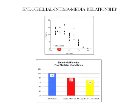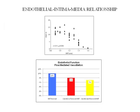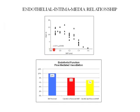Plotting flow-mediated vasodilatation — a marker of endothelial function — against intermediate thickness — a marker of soft plaque deposition — there's an inverse relationship. Individuals with strong endothelial function and good physiology have a lower intermediate thickness. Conversely, individuals with impaired endothelial function have a greater soft plaque burden as measured by intermediate thickness.